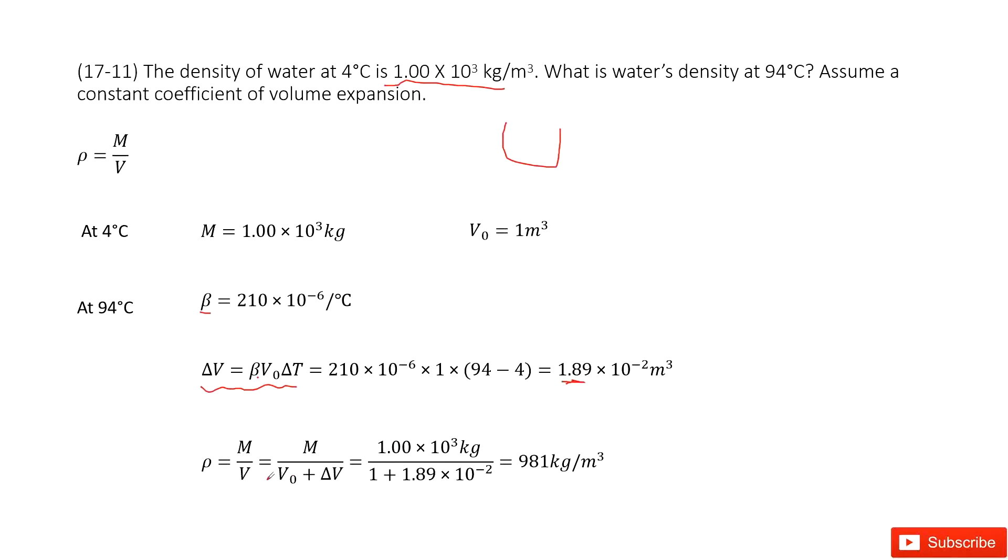Now we look at the density at the temperature of 94 degrees. We use mass divided by volume. We can see in this case the mass is a constant, still 1,000 kg. And the volume becomes the initial volume plus the volume changed, ΔV.